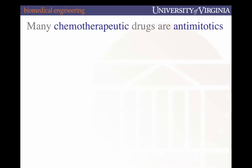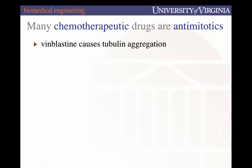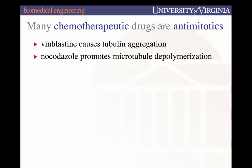There are a lot of chemotherapeutic drugs that are anti-mitotic — drugs used in cancer that inhibit mitosis. Vinblastine is one that causes tubulin aggregation. Catastrophe is a key part of tubulin polymerization, and if there's no ability for catastrophe or disassembly, that will promote cell death. Nocodazole is another drug that promotes microtubule depolymerization.